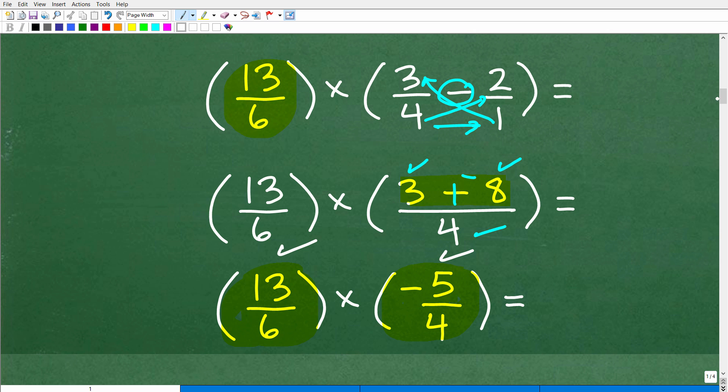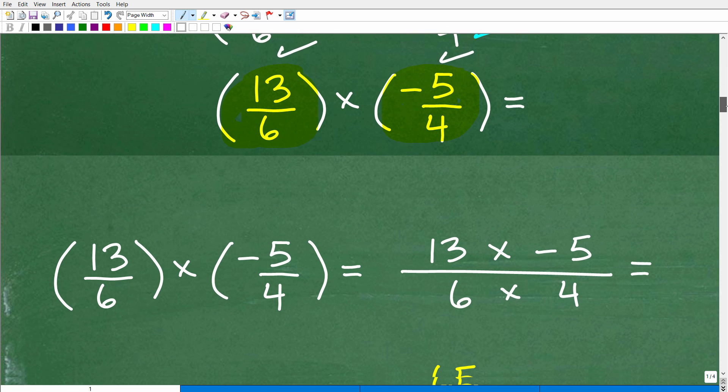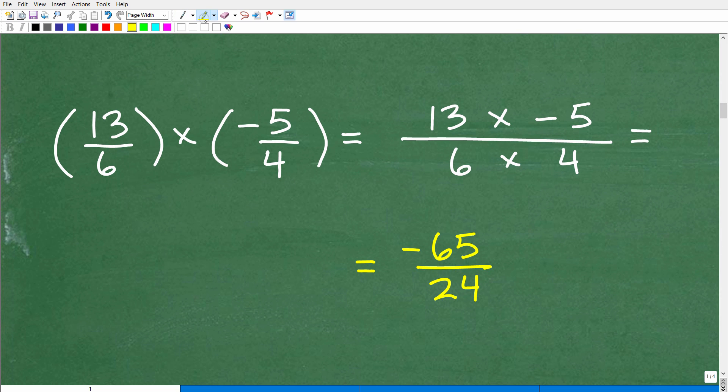So now we need to talk about how to multiply fractions, which is super easy. It's probably the easiest thing to do in math. When you're multiplying fractions, you simply multiply the respective numerators. So in this case, this is 13 times negative five. That'll be the numerator of our answer over the respective denominator, six times four.